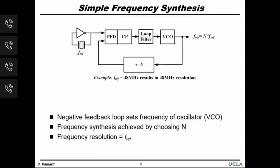Let us start with the simplest frequency synthesis technique — the integer-N phase-locked loop. The loop sets the frequency of a high-frequency voltage-controlled oscillator using negative feedback, comparing the phases of a reference oscillator and the divide-by-N block's output. The negative feedback forces the reference oscillator and the divider output to be in phase in steady state. Accordingly, the VCO locks to a frequency exactly N times the reference frequency. Frequency synthesis is achieved by setting the integer N as desired. The frequency resolution is f-ref — for example, a 48 MHz reference gives 48 MHz resolution, which is too coarse for most applications.